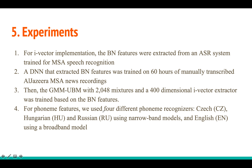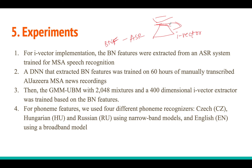For experiments, first the baseline: they use an i-vector based model trained not with MFCC but with bottleneck features (BNF) extracted from an ASR model. You insert a bottleneck layer in the ASR model, extract features from that layer, and use them instead of MFCC to train the total variability matrix for i-vectors.